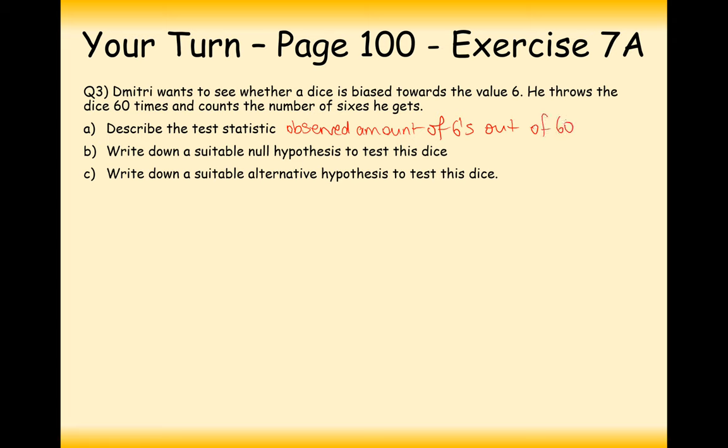The null hypothesis here is going to be the default state. So H0 is going to be P equals 1/6. And the alternative hypothesis here is going to be, so if he thinks that the dice is biased towards the value of a 6, then we're going to assume here that he's looking for the dice to have a probability of greater than 1/6.